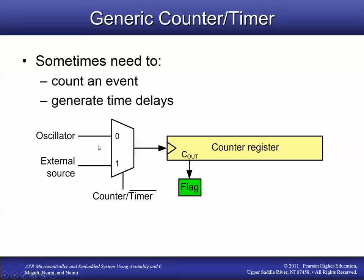The counter timer can have two sources of input. It could either come from an oscillator — in that case it would be used as a timer, since an oscillator is another word for a clock — or from an external source, such as a light beam switch that triggers the counter every time it generates a pulse, making it a counter. This input goes into a counter register, and every time a signal comes in, the counter register increments.